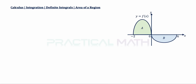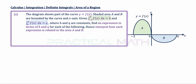This video is about calculus integration as well as definite integrals and the area of regions. In part A of this question, the diagram shows part of the curve y = f(x), with shaded areas A and B bounded by the curve and the x-axis. Given that the integral of f(x) from -2 to 0 equals h, and the integral of f(x) from 0 to 6 equals q, where both h and q are constants, find an expression in terms of h and q for each of the following.